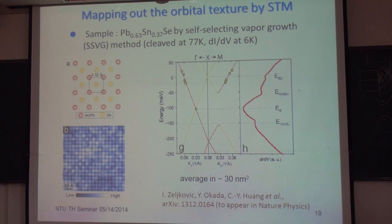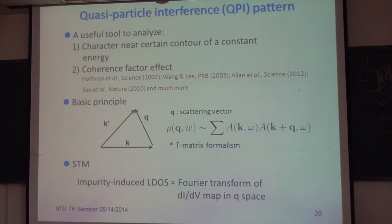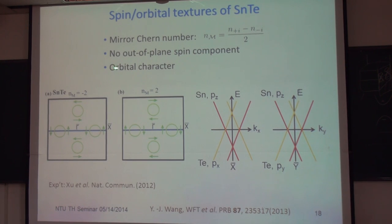As I mentioned, one important, significant feature for surface states is that it has very interesting orbital character. As I draw here, it's different. There is asymmetry with respect to the Dirac point, right? Okay. Then how to detect?